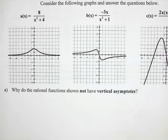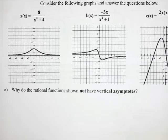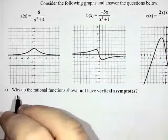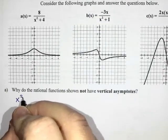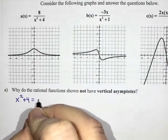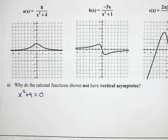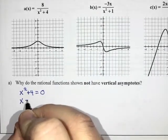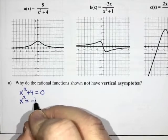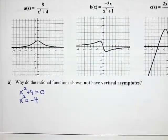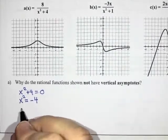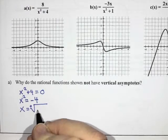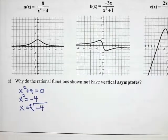So we said vertical asymptotes happen at the values where the denominator equals zero. So I'm going to try taking that denominator and setting it equal to zero. And then I want to see what happens. So if I subtract 4, I get zero take away 4 is negative 4. And then when I square root, I'm going to get the plus and minus square root of negative 4.